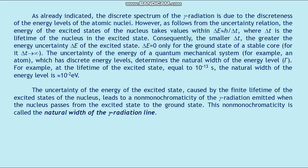The uncertainty of the energy of a quantum mechanical system — for example, an atom — which has discrete energy levels determines the natural width of the energy level Γ. For example, at a lifetime of the excited state equal to 10⁻¹³ seconds, the natural width of the energy level is approximately 10⁻² eV. The uncertainty of the energy of the excited state, caused by the finite lifetime, leads to non-monochromaticity of the gamma radiation emitted when the nucleus passes from the excited state to the ground state. This non-monochromaticity is called the natural width of the gamma radiation line.